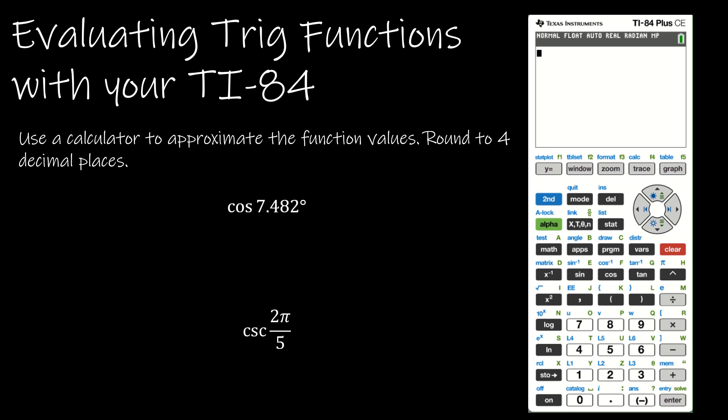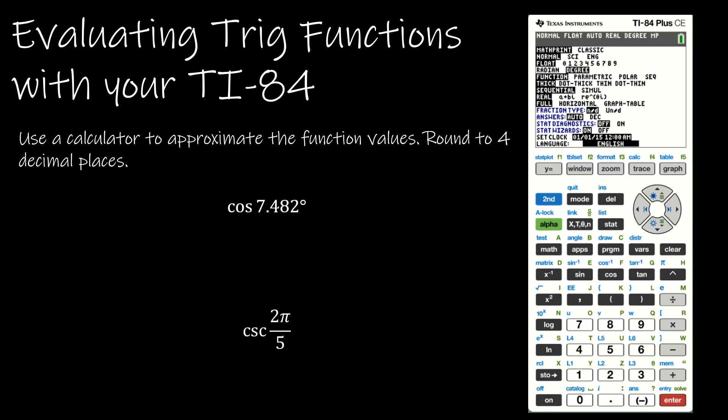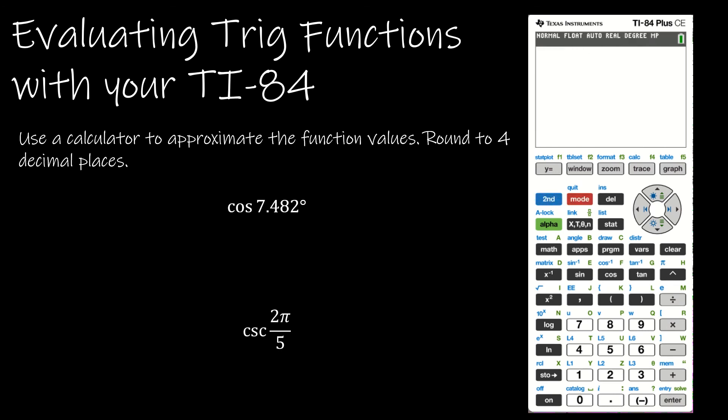And that of course means to use our calculator. So click on Mode and make sure you're in the correct mode for your argument. In this case, the first argument is a degree. So I've changed my calculator to degrees. And I can simply do cosine of 7.482 and find my solution. So rounded to 4 decimal places would be 0.9915.